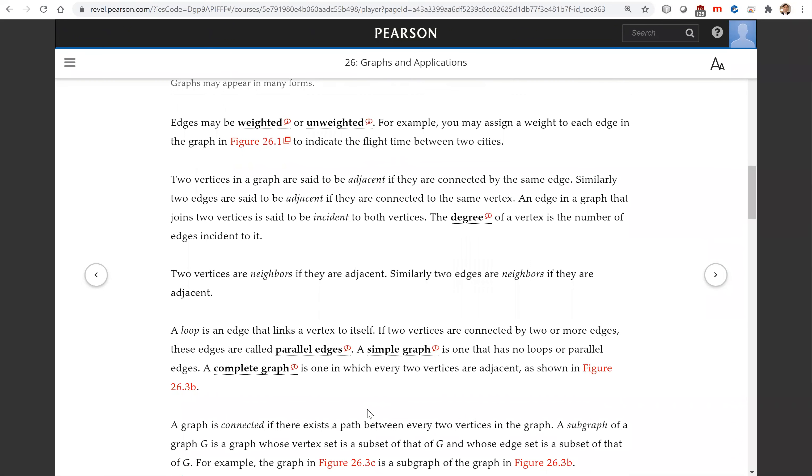Two vertices are neighbors if they are adjacent. Similarly, two edges are neighbors if they are adjacent.